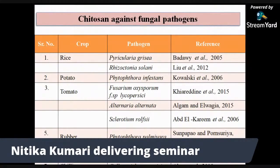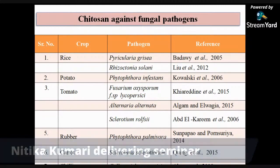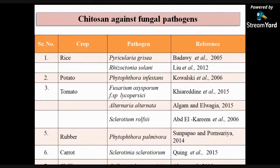The following table indicates how Chitosan is effective against fungal pathogens such as Pyricularia oryzae causing blast in rice, Rhizoctonia solani causing sheath blight in rice, Phytophthora infestans causing late blight in potato, Alternaria solani causing early blight in tomato, Sclerotium rolfsii causing stem rot of tomato, Phytophthora palmivora causing leaf fall of rubber, Sclerotinia sclerotiorum causing Sclerotinia rot of carrot, and Colletotrichum capsici causing anthracnose in chili.